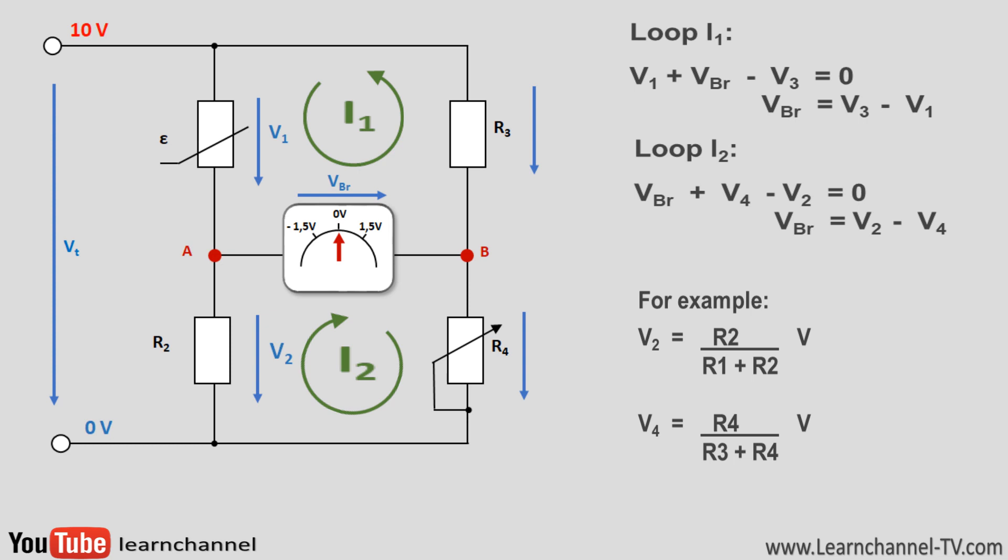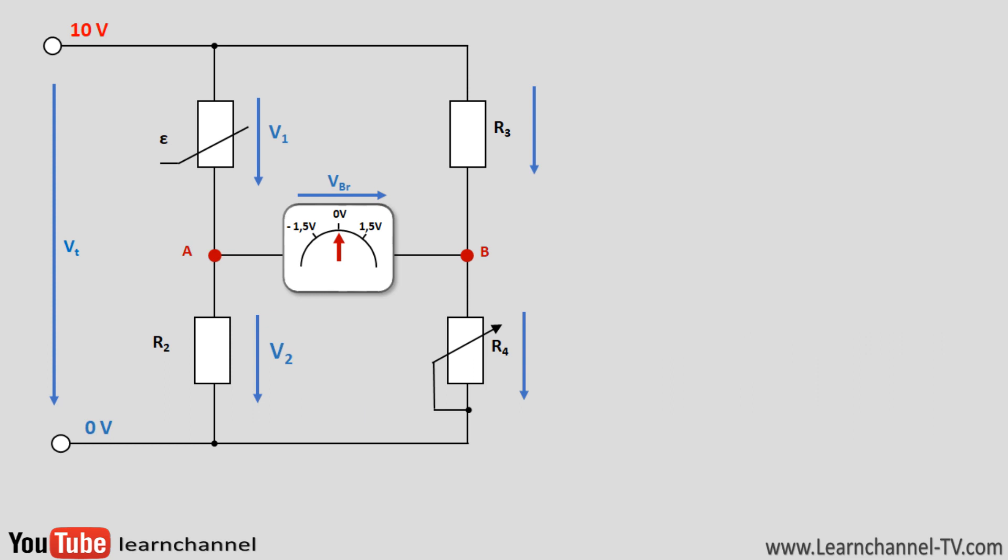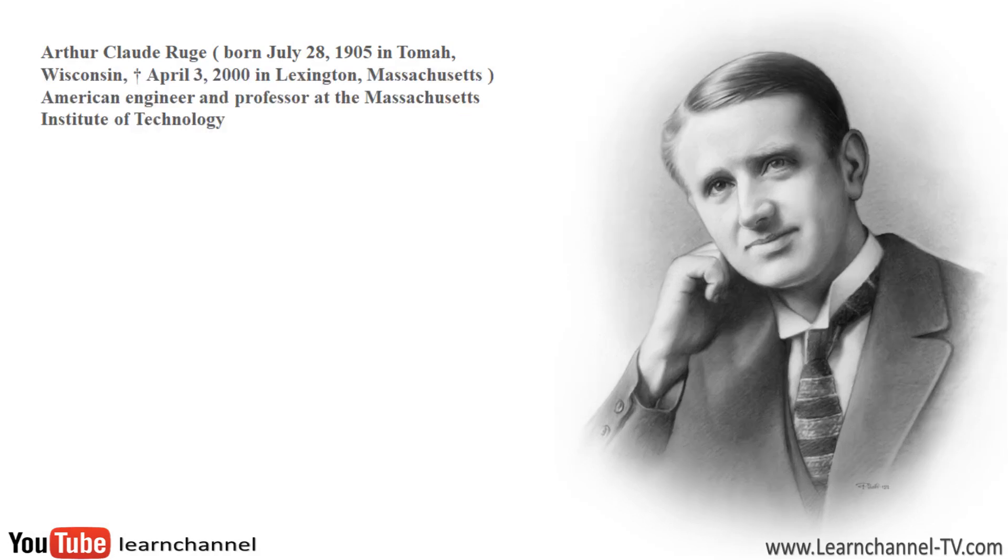Since these strain gauges are often installed in the Wheatstone measuring bridge, we would like to briefly describe the structure and function of the strain gauges at this point. It was 1938 when Arthur Claude Rougie, an American engineer and professor at the Massachusetts Institute of Technology, invented the strain gauges. He recognized the linear relationship between the linear expansion of a conductor and its electrical resistance, and determined how this could be used to measure bending and compression.